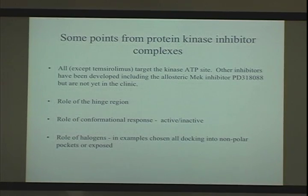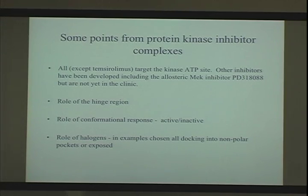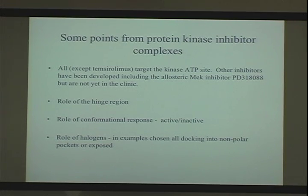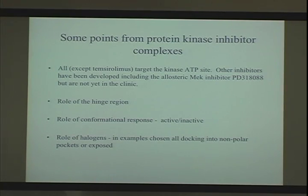So with these 10 compounds, let me tell you what we've learned and how I want to relate it to our own work. They all target the ATP site, except temsirolimus. There are other inhibitors not yet in the clinic — for example, the interesting MEK inhibitor, which doesn't target the ATP site and acts as an allosteric inhibitor. I want to describe the role of the hinge region, the role of the conformational response — specifically whether this involves the inactive conformation — and finally the role of the halogens.